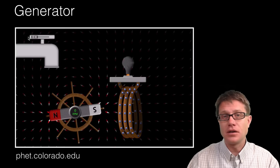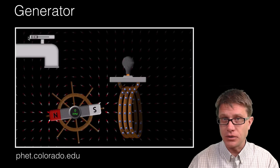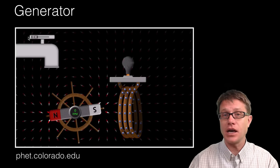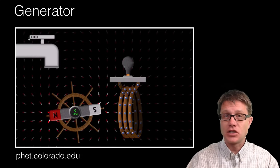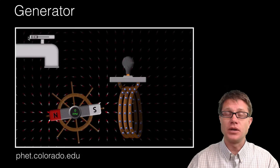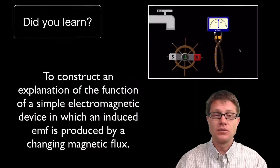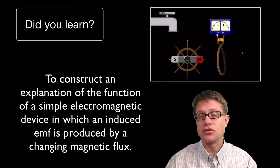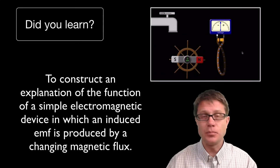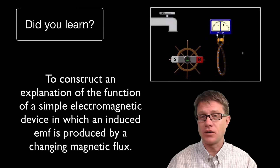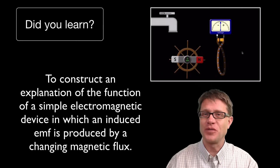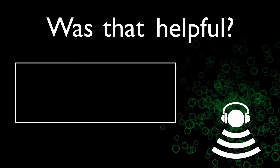This is how the generators in a dam would work. We have the water flowing down through the dam, it is spinning these magnets, and it is creating that electricity. So did you learn to construct an explanation for how a simple electromagnetic device like a generator works? I hope so and I hope that was helpful. Thank you.